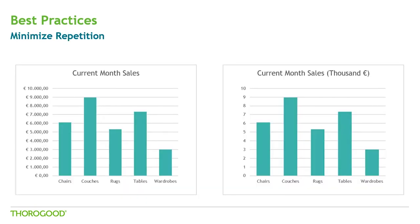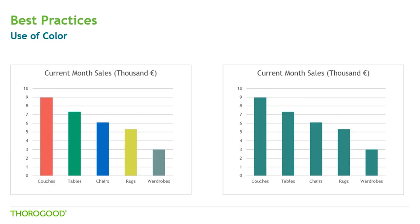Speaking of saving space on your screen, here's something else you can do. On the left we have the y-axis repeating the euro values in the scale 11 times — you have the currency symbol, a dot, three zeros, a comma, plus two zeros at the end for each value. In the chart on the right we've changed the title so it says the values are in thousands of euros, stating that only once, and then making the numbers on the axis a lot simpler — just going from zero to ten. This saves a lot of space and makes it much easier to read.